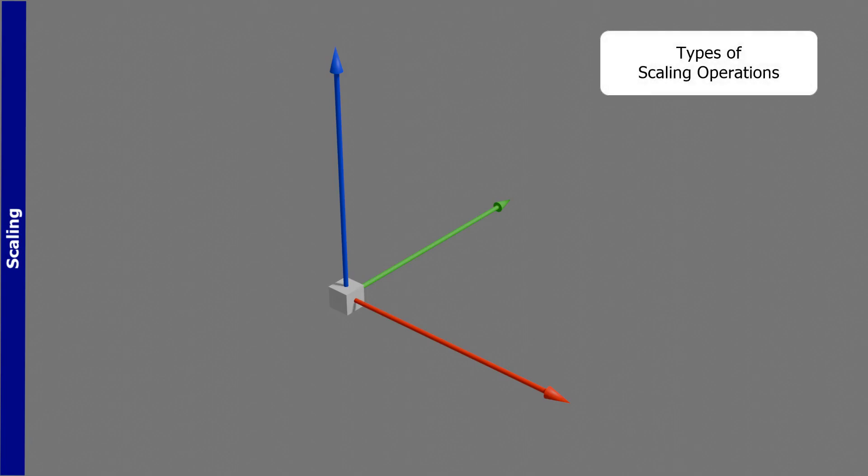There are two types of scaling operations. One can be uniform, where all proportions are kept intact, or non-uniform, allowing dimensions to change independently. Such as scaling in the x-axis, y-axis, and z-axis.